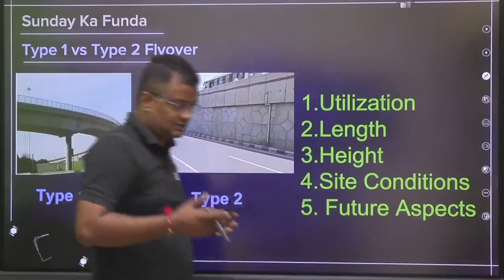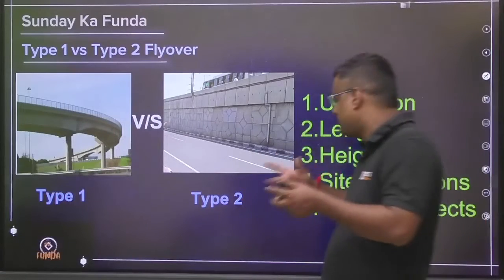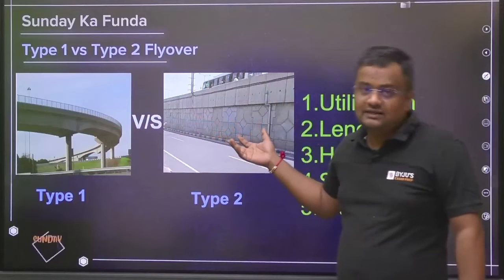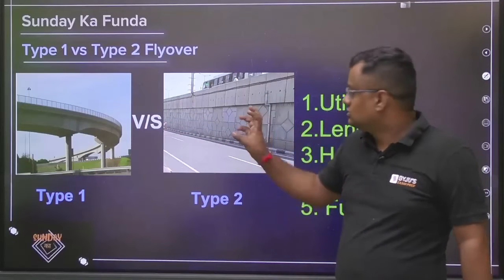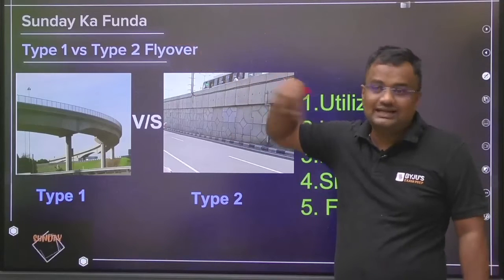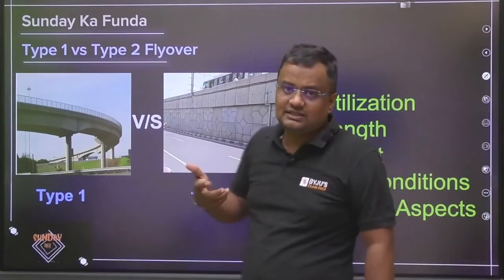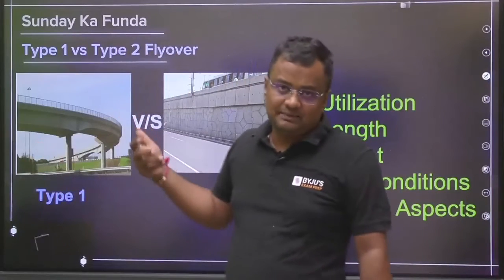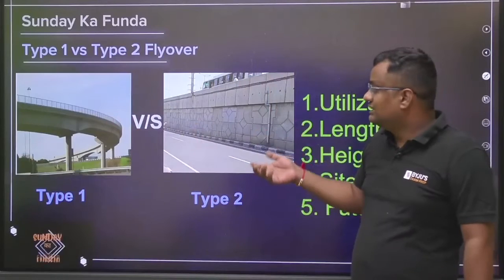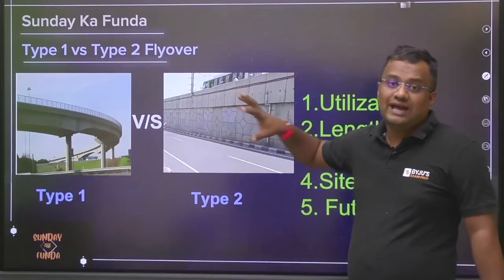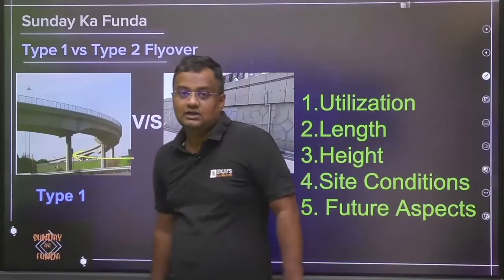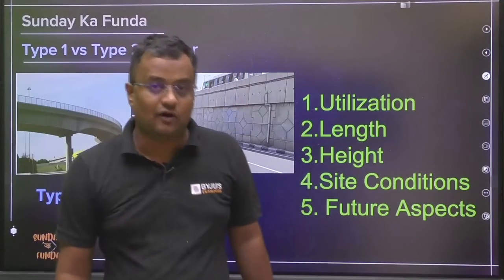The next factor is future aspects. At present, the bearing capacity may be adequate and the flyover length is small, so type two seems fine. But if the city is in a developing phase — new roads, new projects, intersections, or bypasses may come in the future — then a perpendicular road may be needed later. That future possibility also has to be taken care of when deciding the flyover type.